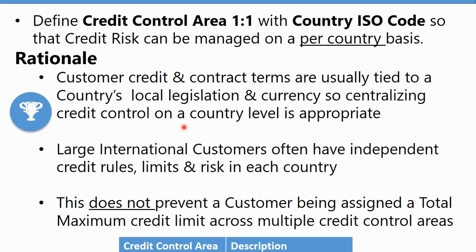The way you would chase up a bad debt or demand payment also applies at the country level. Large international customers often have independent credit rules, limits, and risks in each country, and they do manage credit on a country basis rather than on individual legal entities. If you have a large customer you do business with through multiple company codes, you'd still want to manage the total credit risk and exposure in the US for that big customer. Managing each company code individually makes it harder to see the big picture versus doing it at country level, where you get the total exposure in that country and currency.